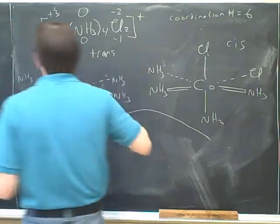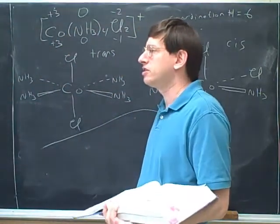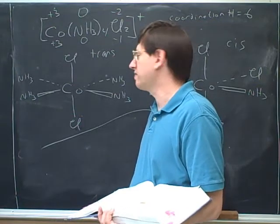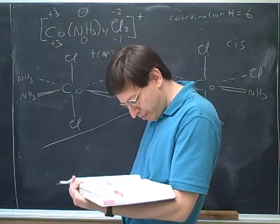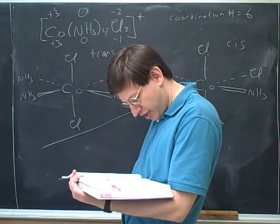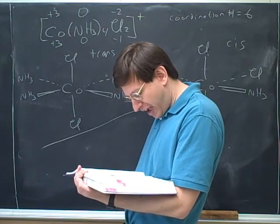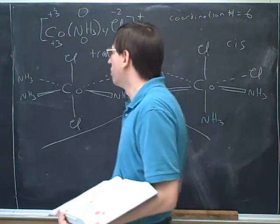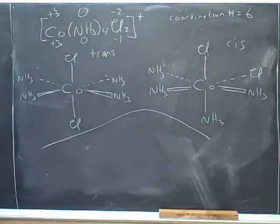By the way, it doesn't make any difference whether you're dealing with something that's cis or trans. Well, it turns out that very often compounds can have very different properties, even because they're isomers. For example, the book mentions here that the cis isomer is violet and the trans isomer is green. So they have different properties.